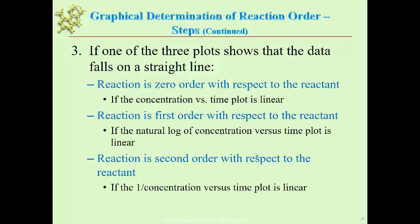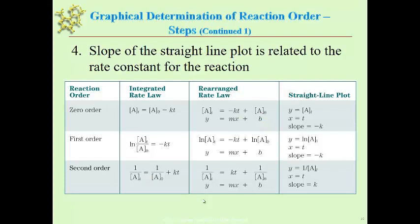For first order, you would take the original data and then change the y-axis to the natural log of the concentration. And then for second order, you would take the original data and change the y-axis to one over concentration. And then each of those you put into Excel and see which one would fit the best.